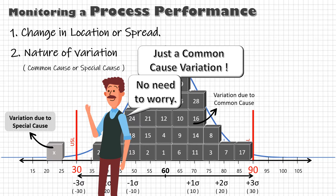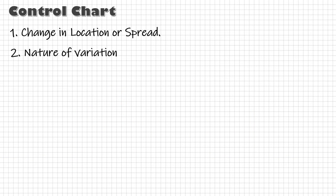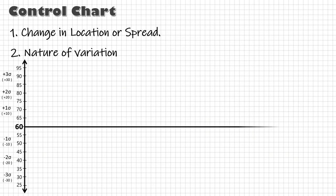The control chart is an excellent tool to solve these problems. Let's see how it works. Suppose there is a process running exactly at target value, an accurate process.